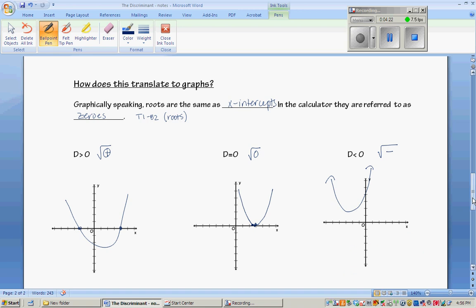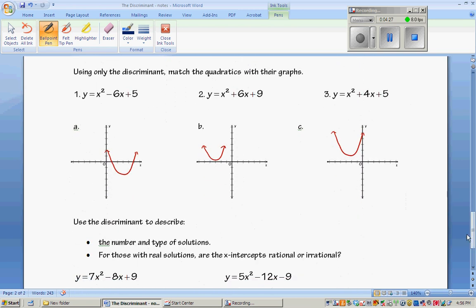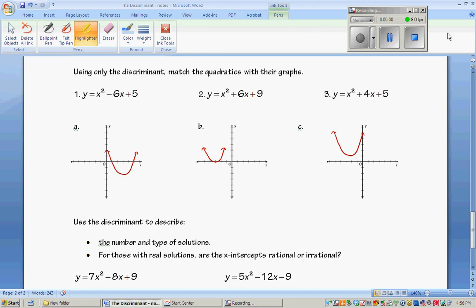So using only the discriminant, just using b squared minus 4ac, you are to try and match these quadratics to their graphs. We have one that crosses twice. This one is technically supposed to be crossing once. Let's see if I can scoot it down enough so it matches up. There it is. You want to have it just cross once.